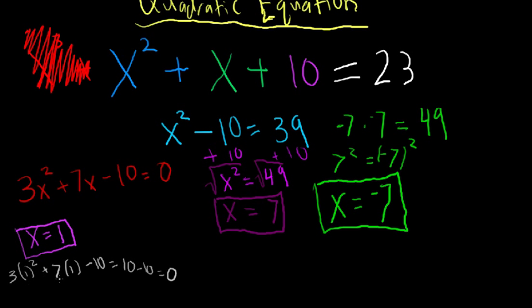With x equals negative 1, we'd have a positive 3 here, but this 7 would be negative. So we'd have positive 3 minus 7, which is negative 4, minus 10, that's negative 14 — that's not 0. So it's not just negative 1.